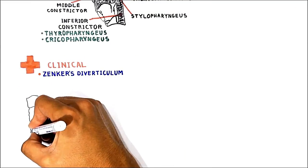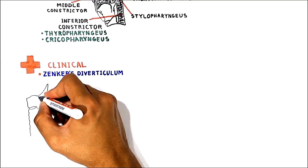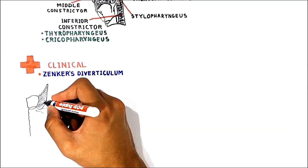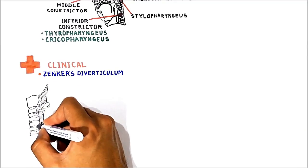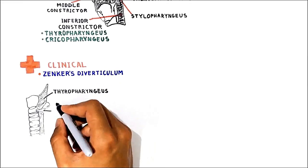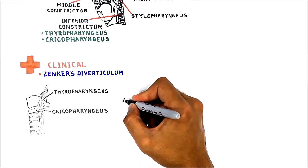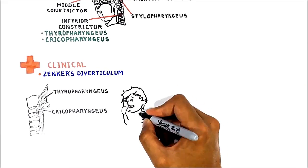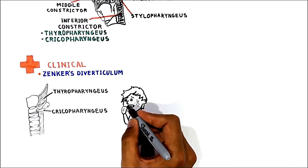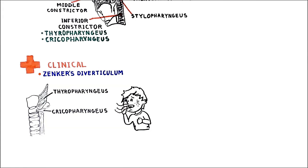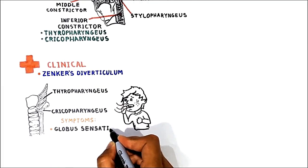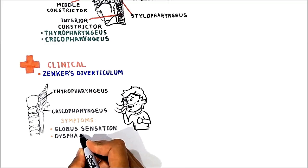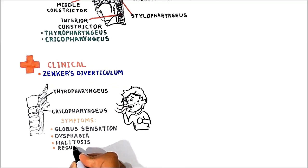Zenker's diverticulum, also known as a pharyngeal pouch, is an outpouching at the level of the laryngopharynx. It is located in the posterior midline at the cleavage plane between the thyropharyngeus and the cricopharyngeus muscle, which is the inferior constrictor muscle. Zenker's diverticulum causes problems when things get stuck there — entrapment of liquid or food within the diverticulum may result in globus sensation, dysphagia, halitosis, and regurgitation.